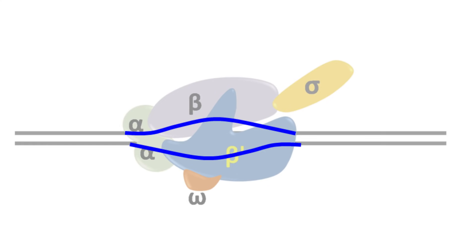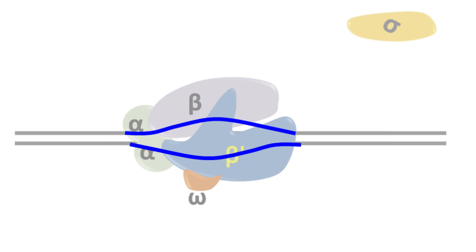Let's talk about elongation. Once the sigma factor is released, the RNA polymerase proceeds for the process of elongation.